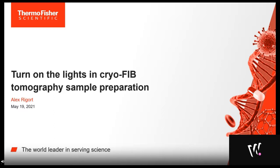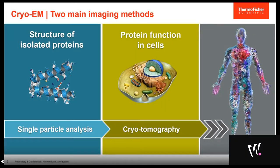Thanks very much for the introduction. Welcome to this webinar. Let me start with an overview of the two main imaging methods in cryo-EM: single particle analysis and cryo-tomography. In single particle analysis, we study isolated proteins at very high resolution, while cryo-tomography lets us look at protein function in cells. Most proteins do not exist in isolation — they form multi-protein complexes or so-called macromolecular machines. The only technique to study these complexes within the context of the cell is tomography.